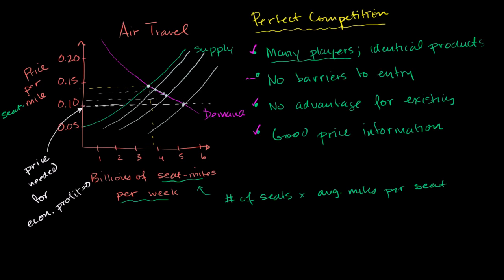And then it keeps happening until we have a supply curve where the equilibrium price, where this new short-term equilibrium price, is the same as the price at which everyone is making a normal profit, or the price needed for zero economic profit. At that point, people are neutral whether they drop out or enter into the market. And so the quantity remains stable.